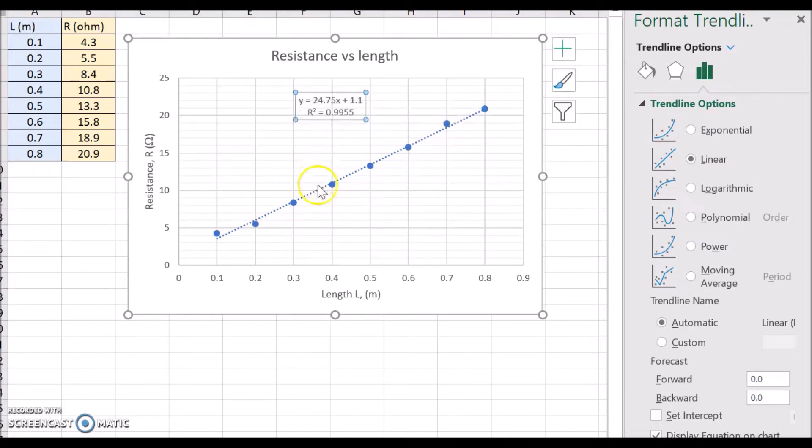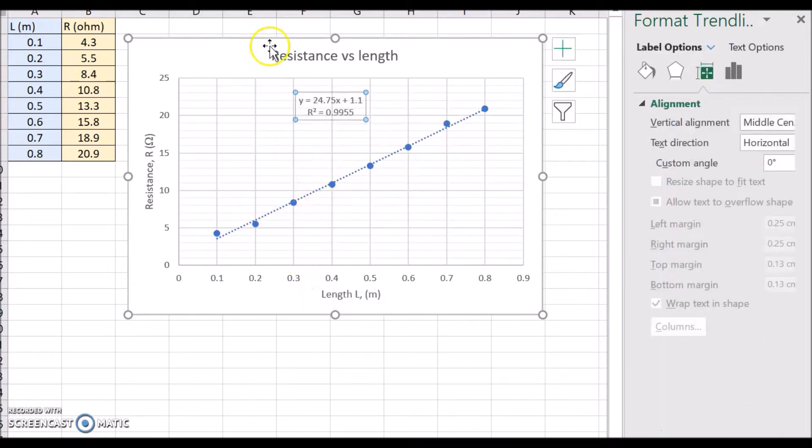Now you'll notice the equation is y, which is the resistance, is equal to 24.75 times the length plus 1.1. And the R squared value is 0.99, so that means that the data is a very good fit for the equation and vice versa. So let's have a look at this 1.1.